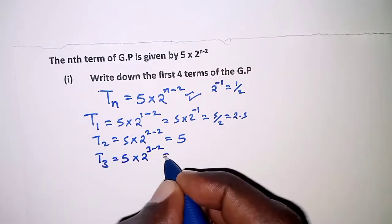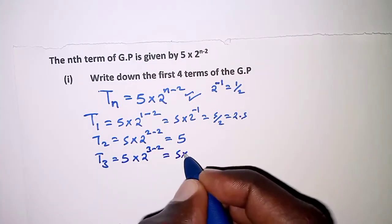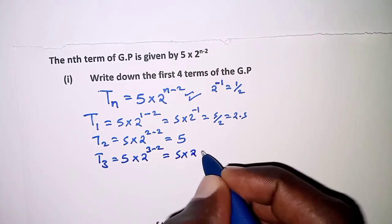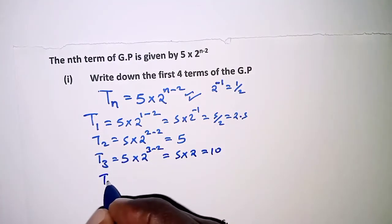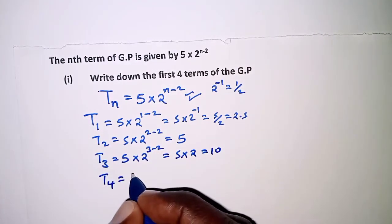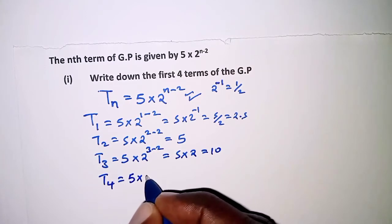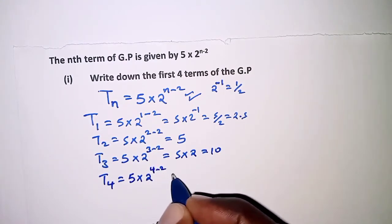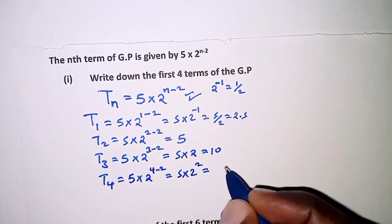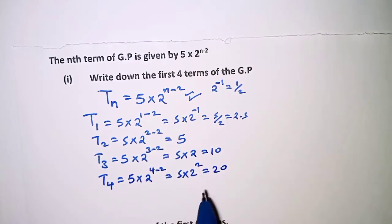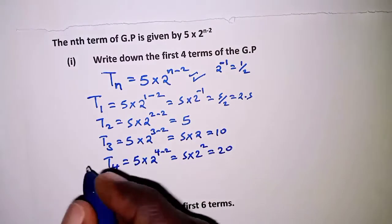and that is 5 × 2, and the answer there is 10. And lastly, the fourth term: 5 × 2^(4-2), and that is 5 × 2², and that is 20.